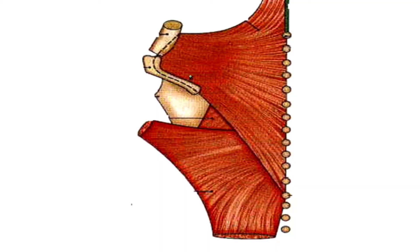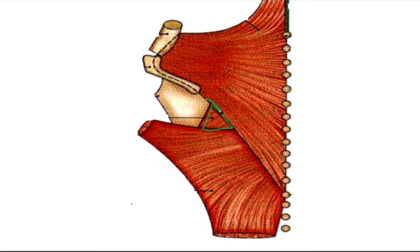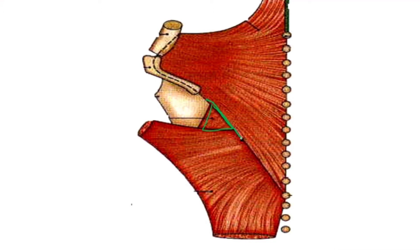The triangle of auscultation is a small triangular interval. This space present here is the triangle of auscultation. It has a medial wall, a lateral wall, and an inferior wall.